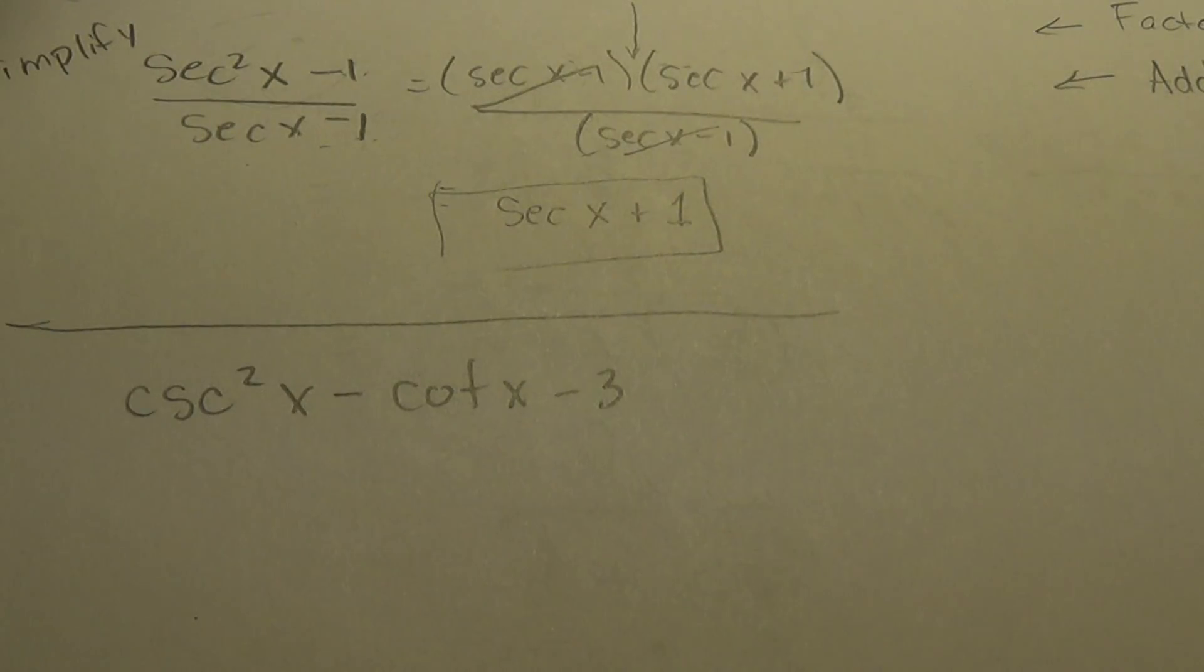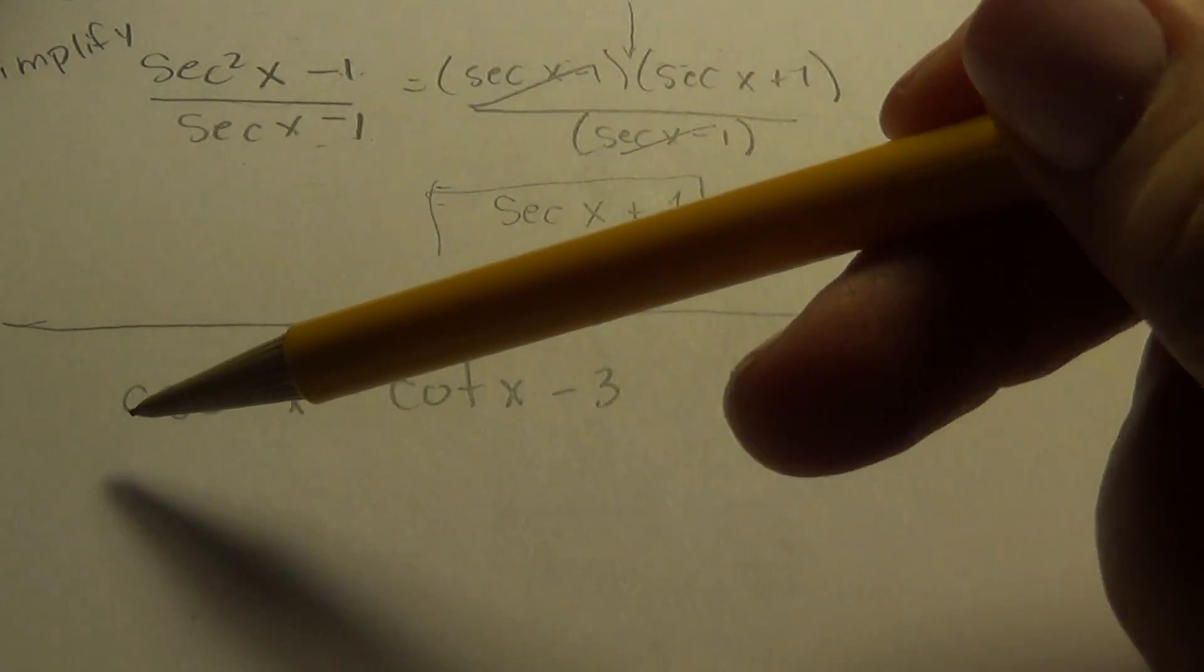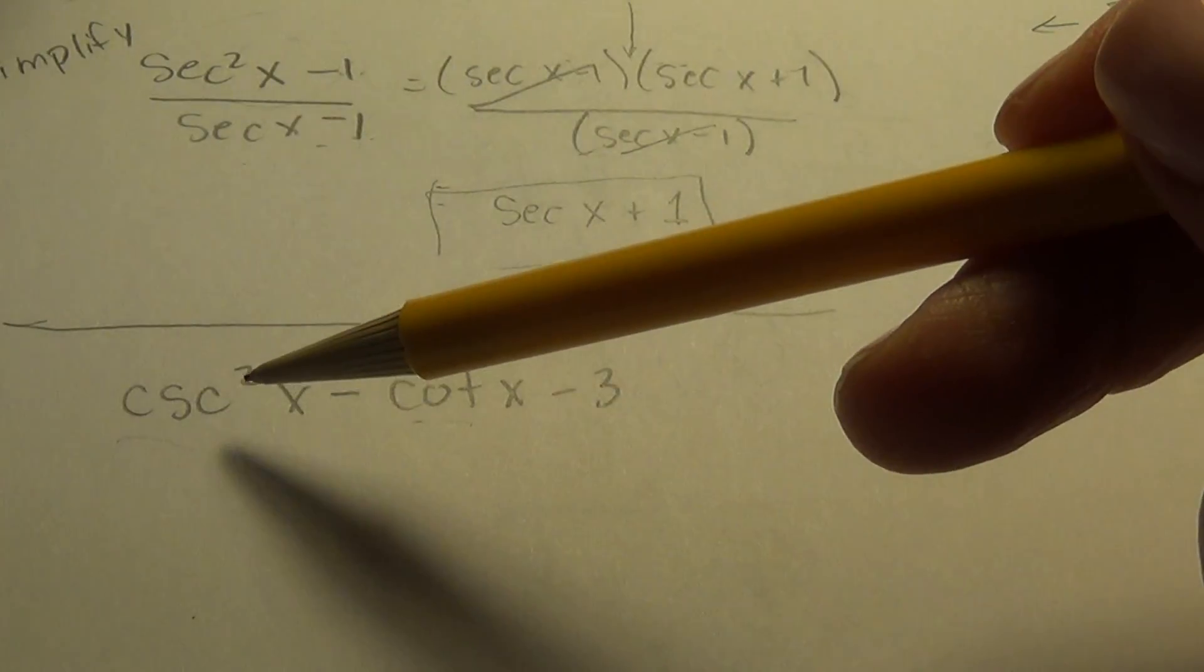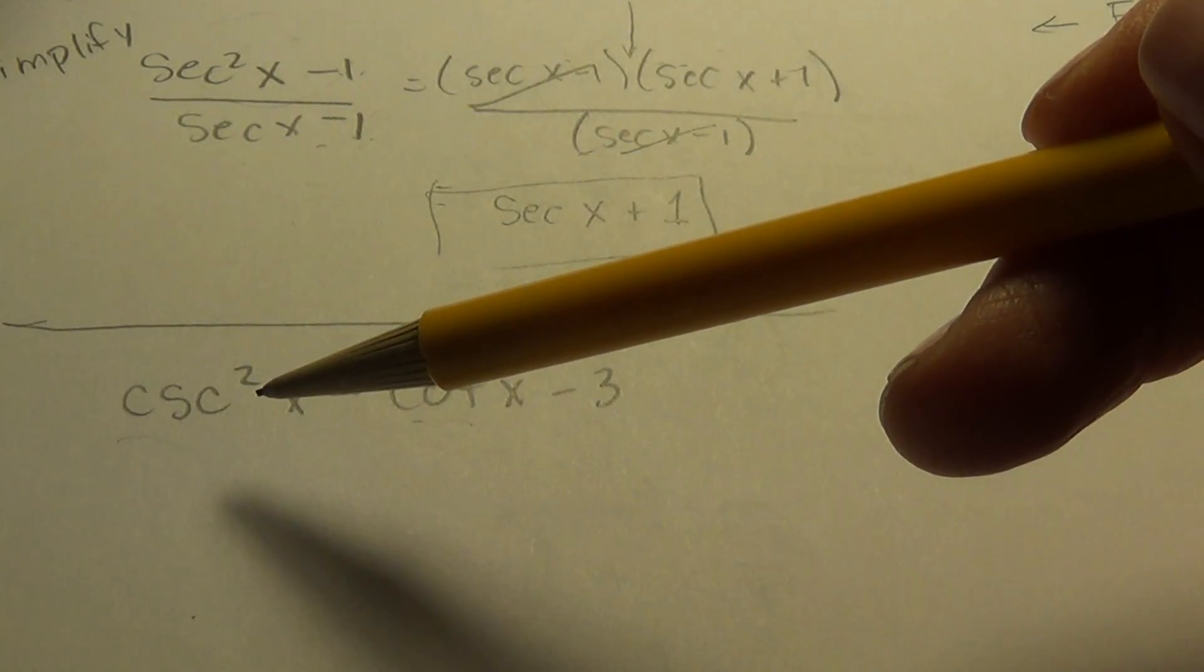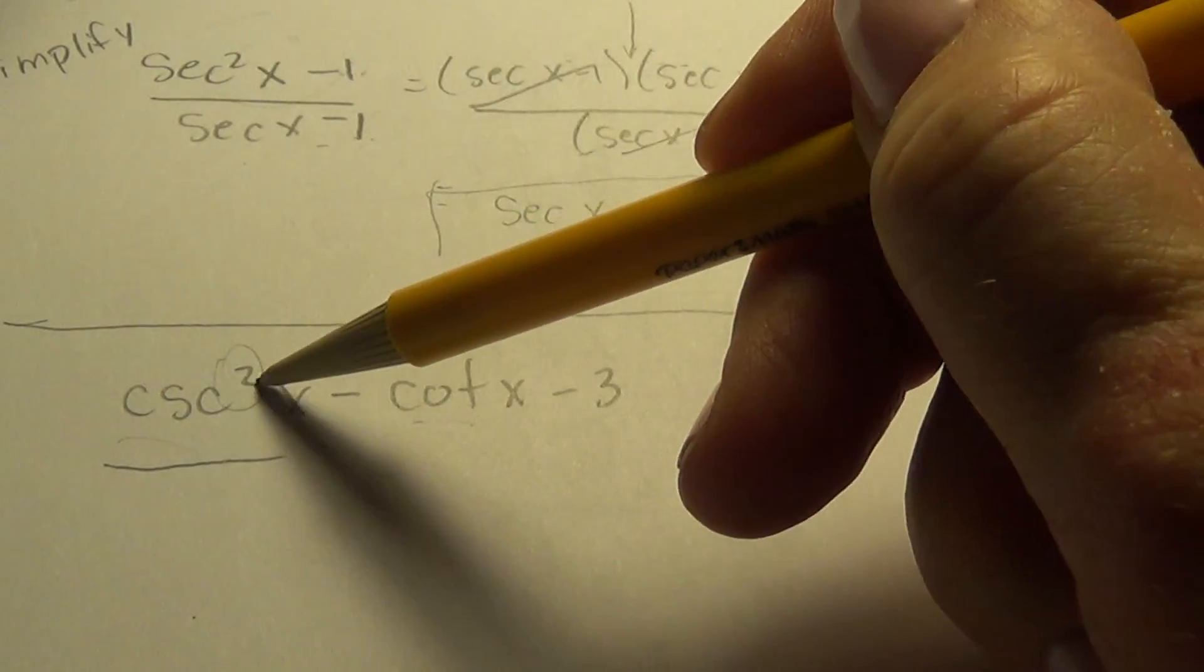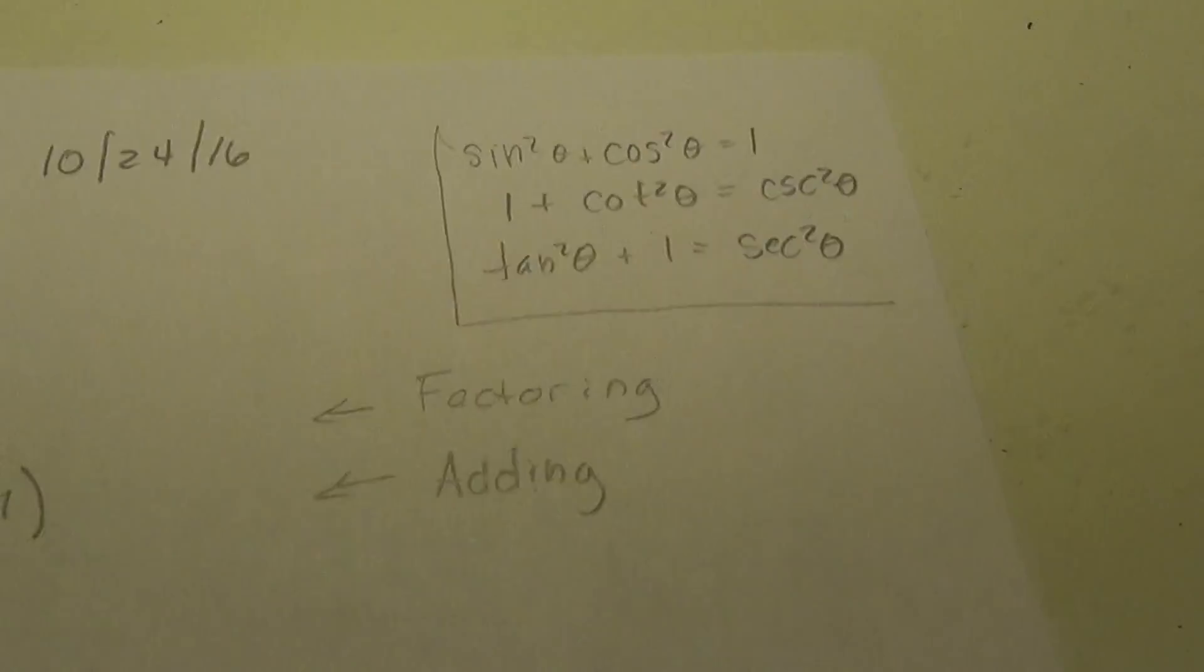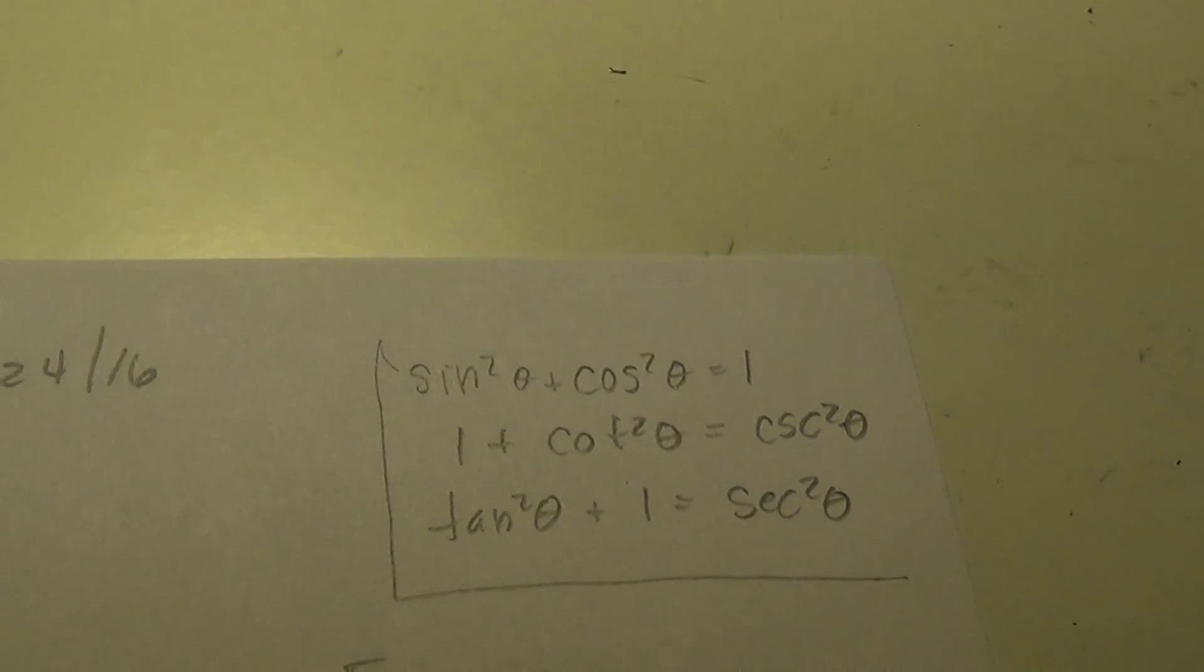So let's see what we can do with this one. Well we can't factor it until we have the same function throughout. So what would be a good idea to substitute in so that I get the same function throughout? Well I see this is a cosecant squared, and that always points me to the Pythagorean theorem, I mean the Pythagorean IDs over here, where I do see a cosecant squared.